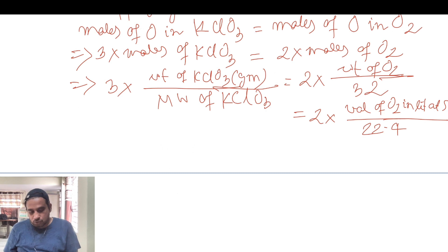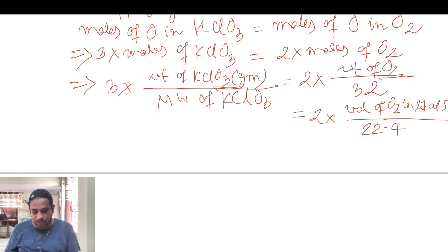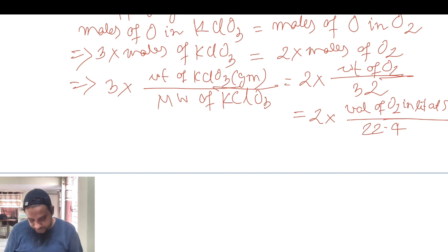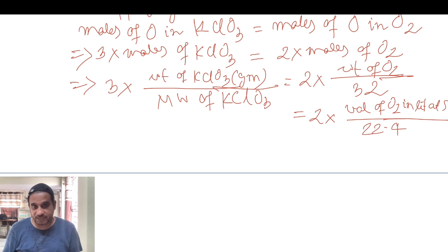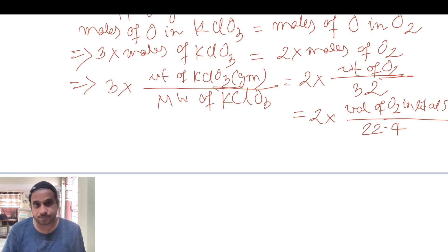If you have the weight of KClO3, you can calculate the weight or volume of products. PoSC is essentially a microscopic principle of conservation of mass. These problems are generally solved using PoSC, and the first step is always to apply PoSC on each element to solve the stoichiometry.